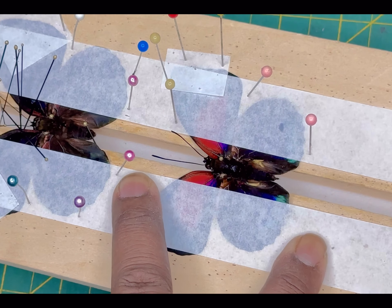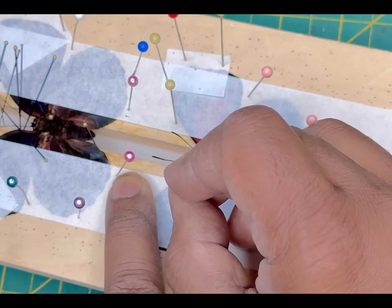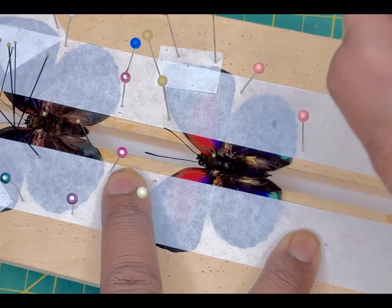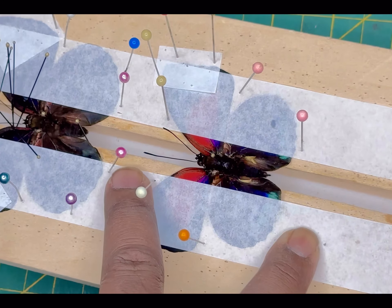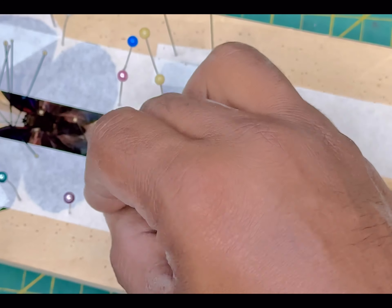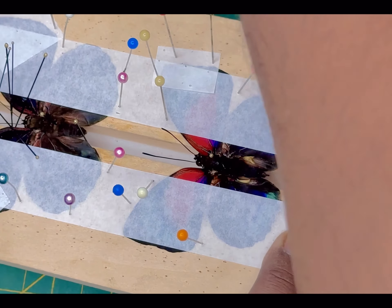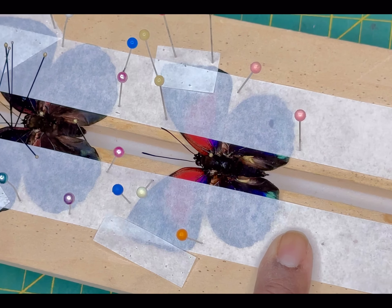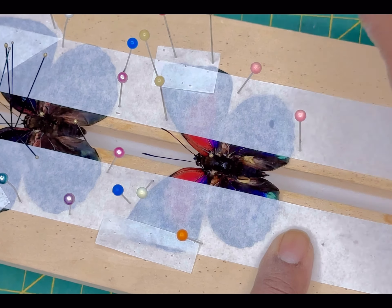The reason why these guys are called cocaine butterflies is because as a larva they feed on the plant that's used to make cocaine, and they are found in the zones in South America where narco traffickers are quite active in their production. So they've been given that nickname.